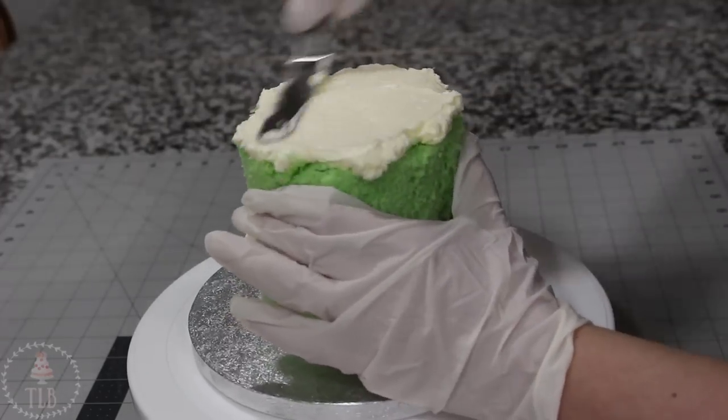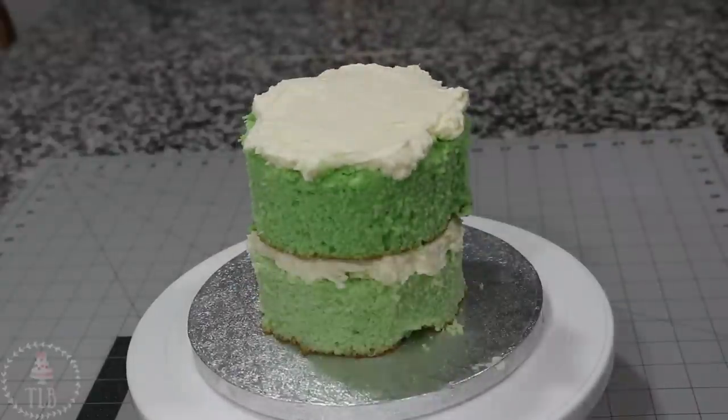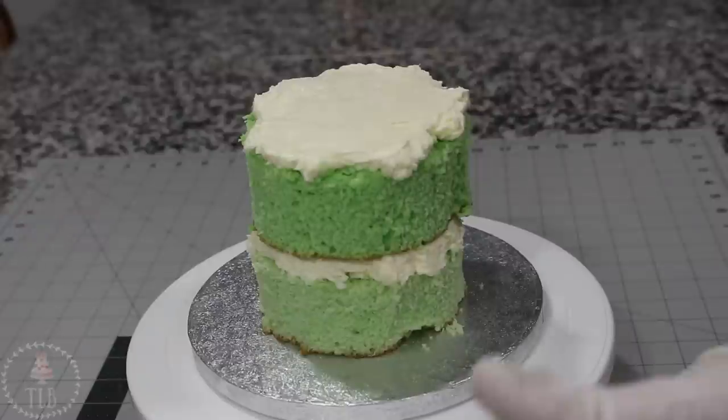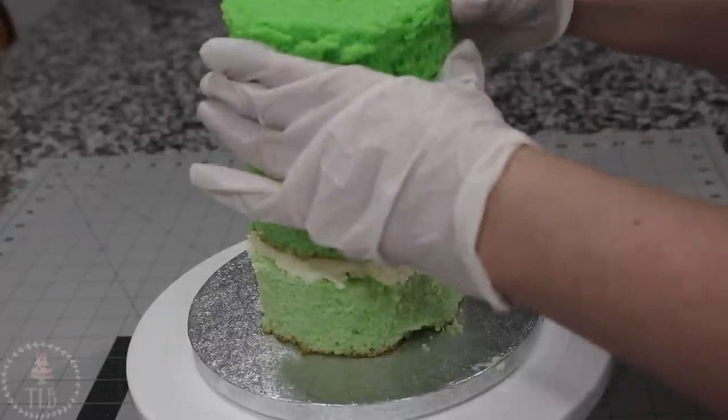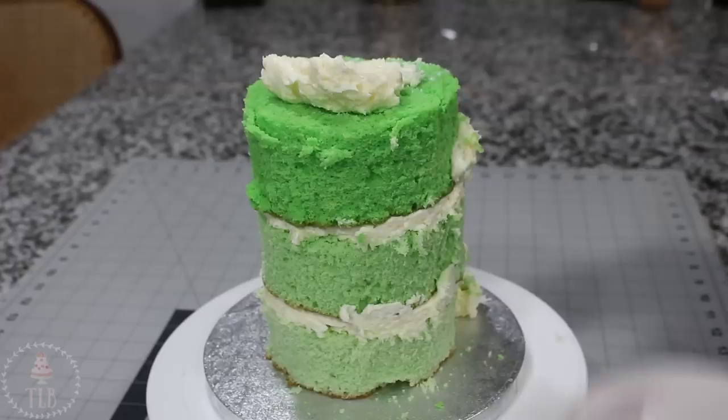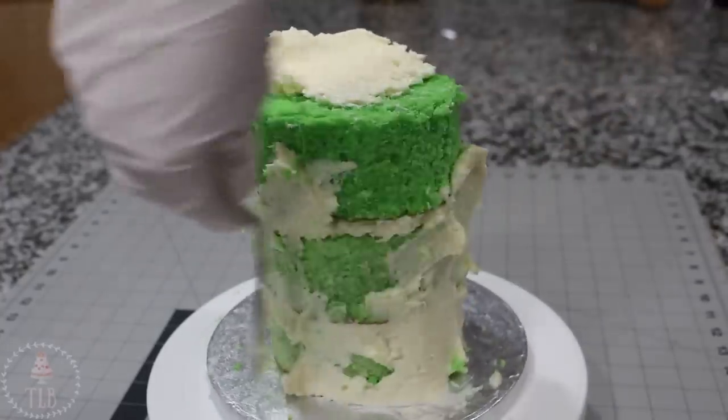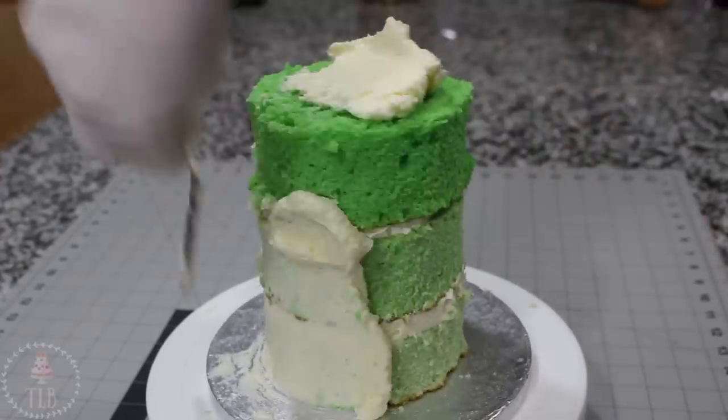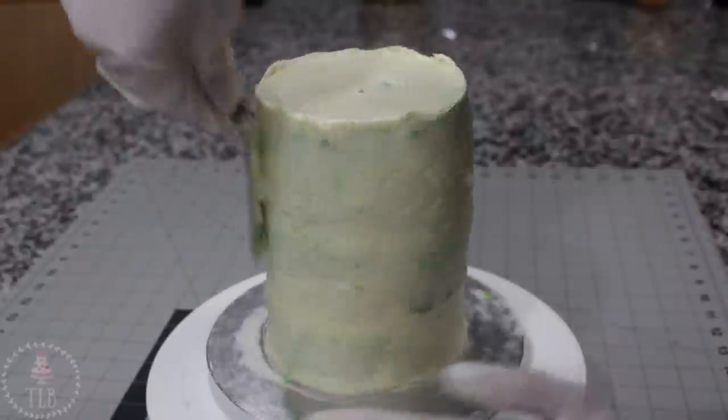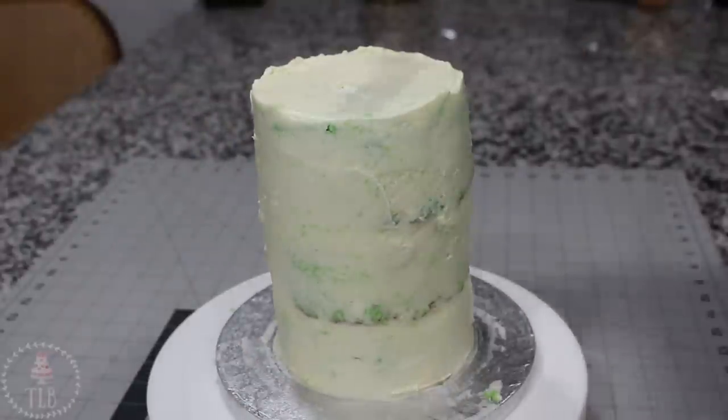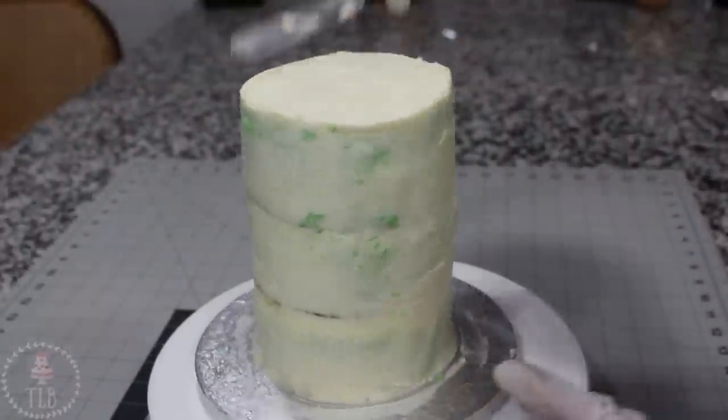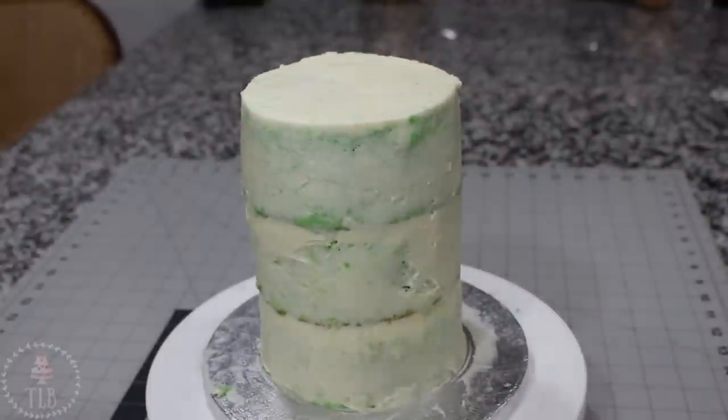I definitely wanted this to be an ombre green and as I'm watching the video I realized that I put the lightest color at the bottom and worked my way up, so not what I was going for but it was still cute. Once it was stacked up I'm adding a thin layer of buttercream all around the outside to lock in the crumbs. This was a very moist cake so this step is very crucial to make sure that the final icing isn't lumpy and bumpy.